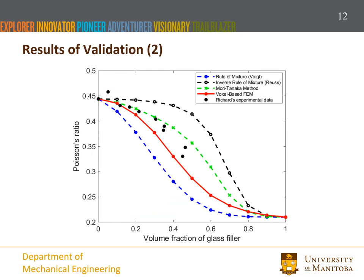This figure shows the results related to Poisson's ratio. From this figure, it can be seen that the Mori-Tanaka method has better agreement with the experiment data than the other two methods.